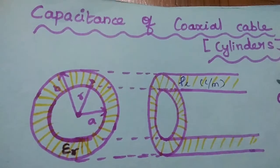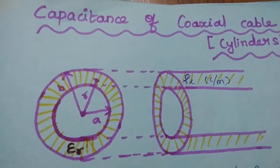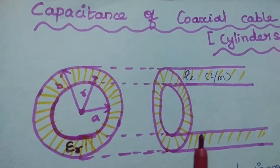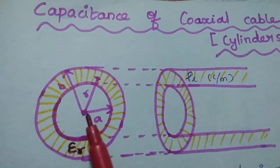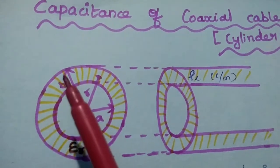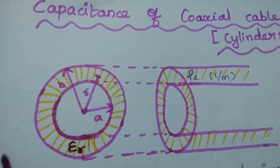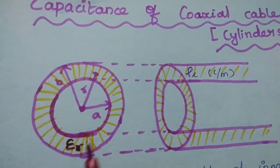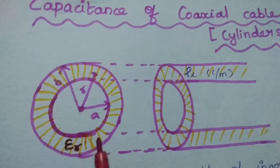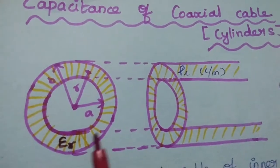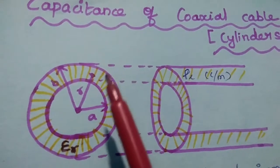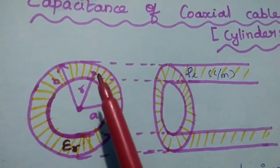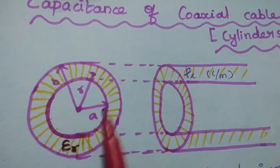Coaxial cable is also known as sliders. This is the front view and this is the side view of the coaxial cable. Here we have the radius of the inner conductor as A, and the radius of the outer conductor as B. Epsilon R is the relative permittivity of the dielectric material used in this coaxial cable. We are going to find out the capacitance at a distance R which is in between A and B.